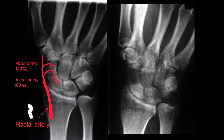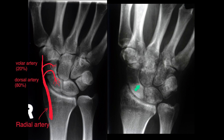That's because the blood supply from the radial artery gives rise to both the dorsal and volar arteries. Volar is the other name for palmar. The dorsal artery supplies 80% of the scaphoid, and when it's involved in a fracture it can disrupt the blood supply. Depending on where the fracture is in relation to this artery determines whether avascular necrosis will occur. The volar artery supplies 20% of the scaphoid and is usually unaffected by the waist fracture.